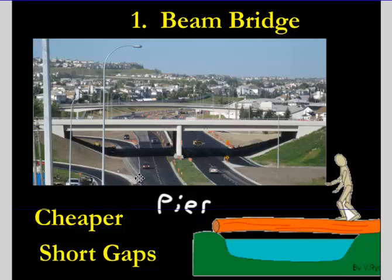That's what beam bridges are — they're nothing fancy. And because they're nothing fancy, you don't need a lot of materials to build it. It's just a road and a couple of piers here and there. And they're cheaper — not cheap, they cost millions of dollars — however, they're cheaper than the other kinds of bridges. So they're for short gaps and they're cheaper to make.